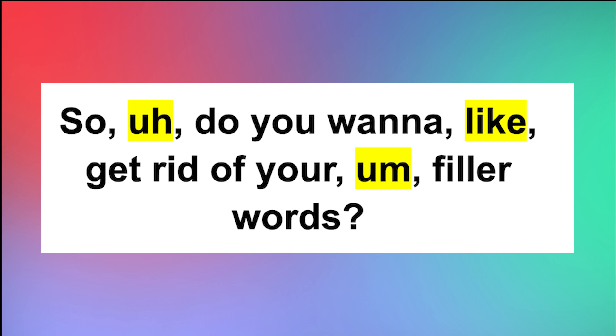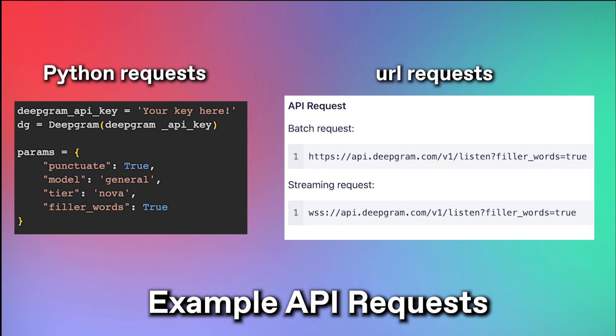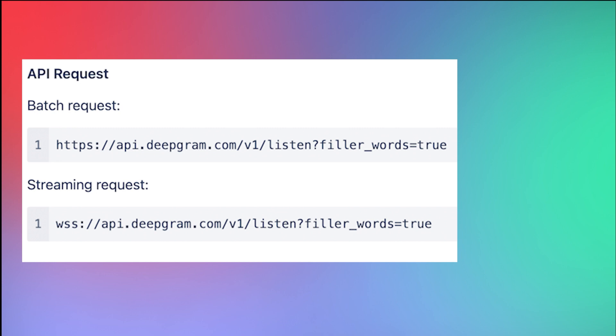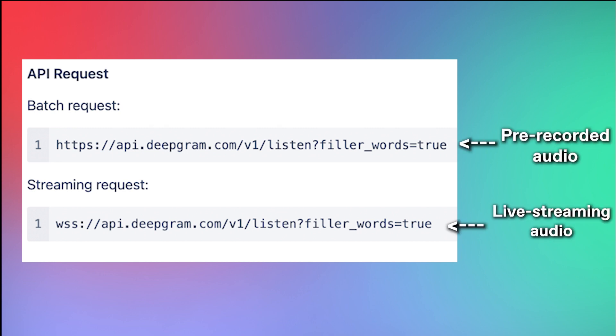It works like any other DeepGram parameter. If you set filler words to true, like in these API calls here, our models will include every filler word you say. If you set filler words to false, our models will exclude them. You can do this for both pre-recorded audio and for live streaming audio.